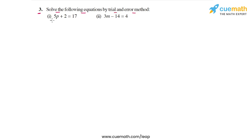Question three asks us to solve the following equations by trial and error method. We are given two equations and we have to solve each equation using trial and error, which basically means that we will try giving different values to the variable and try to get the LHS and the RHS to match. Once they match, we will have found our solution. So let's start with part one.